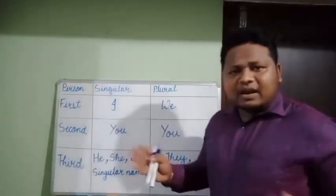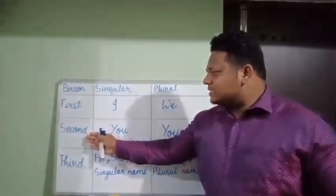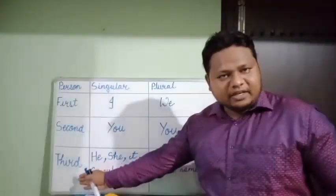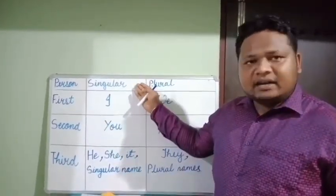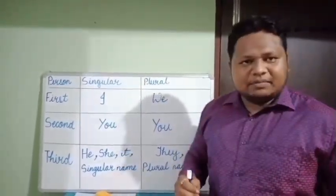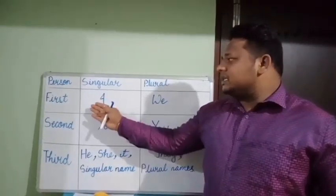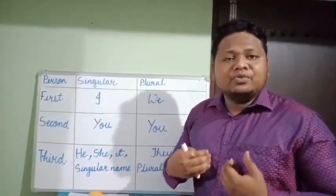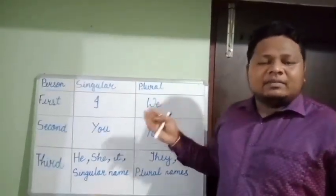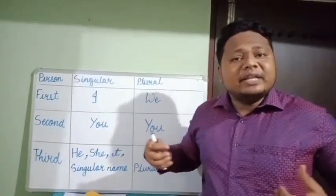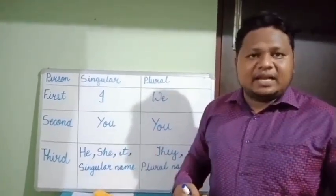Now let us look at the different subjects in English grammar. In English grammar there are three persons: first person, second person, and third person, and there are two forms of each person — singular and plural. The first person singular is 'I,' the one who speaks, and the plural is 'we,' meaning when more than one person speaks at the same time.